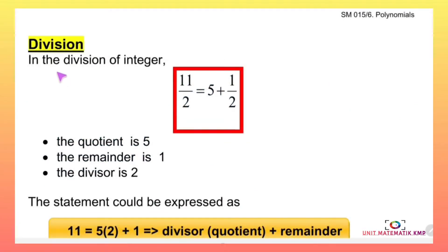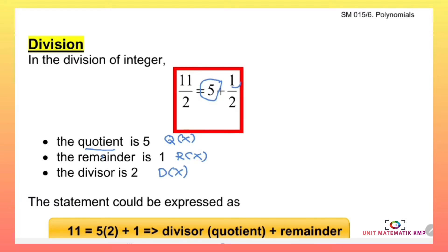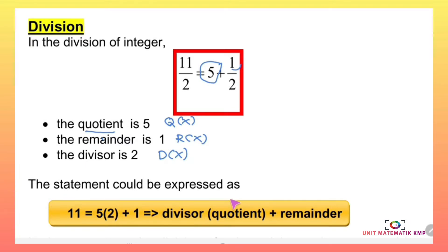Next we move to division of polynomials. In the division of integers, here we have 11 over 2, which is equal to 5 plus 1 over 2. The number 5 we call the quotient, denoted as q(x). The number 1 we call the remainder, r(x), and the number 2 we call the divisor, d(x).